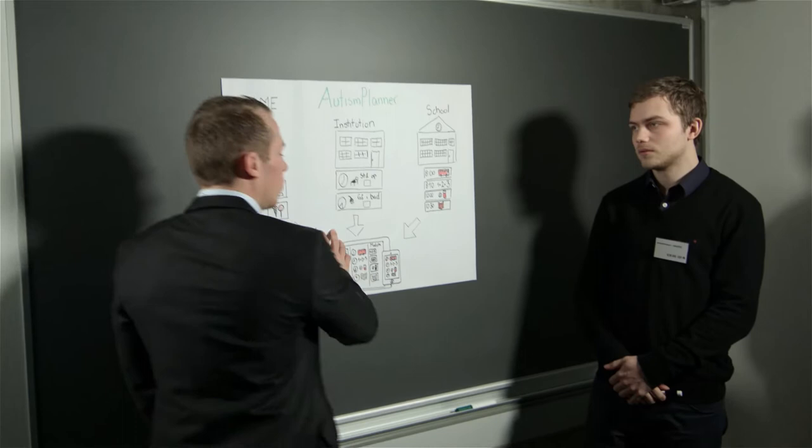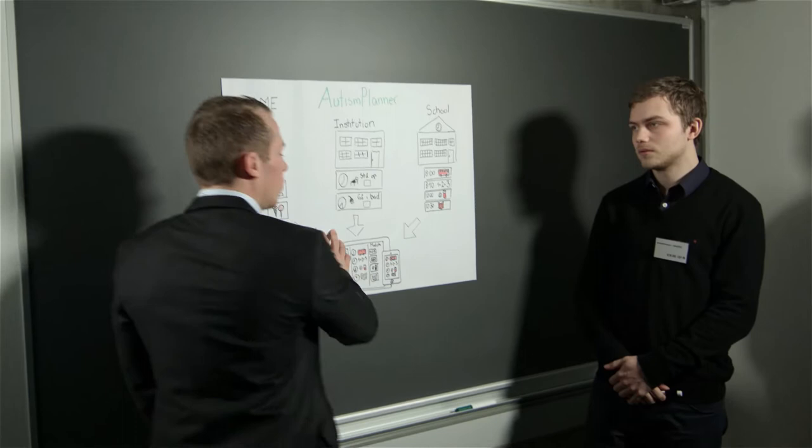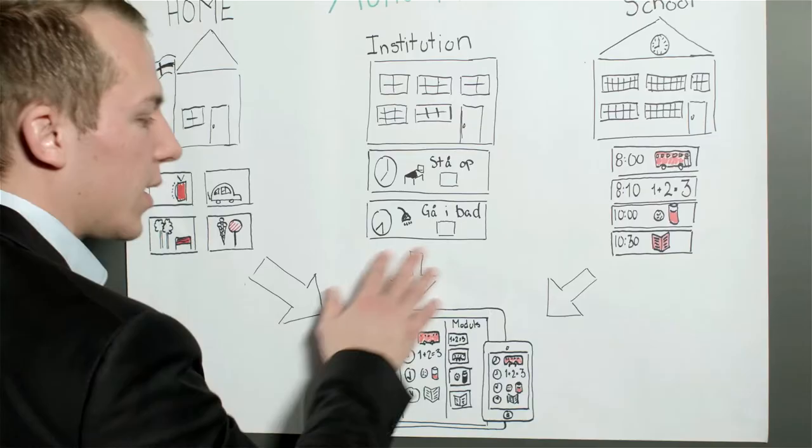With Autism Planner, children all over the world can manage their daily schedule simply and independently. The app synchronizes plans from the home to the institution directly to all devices.